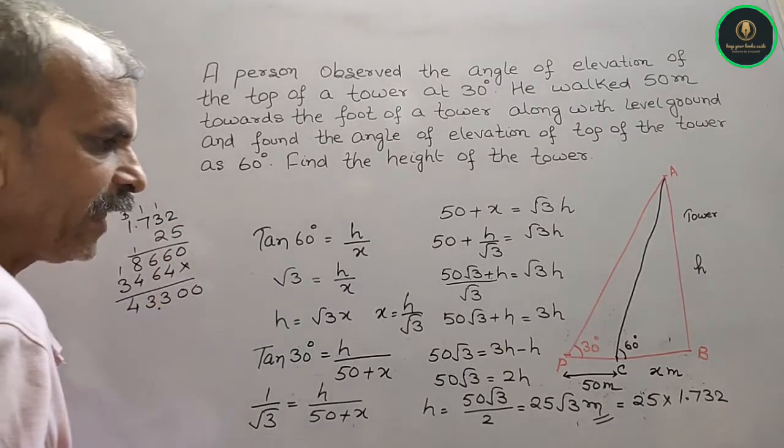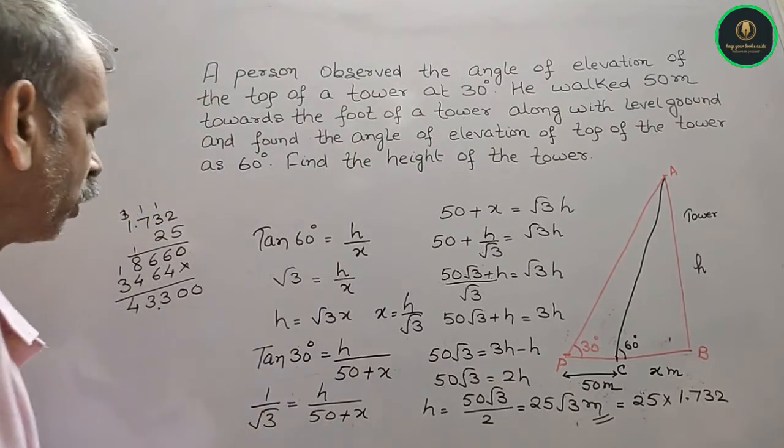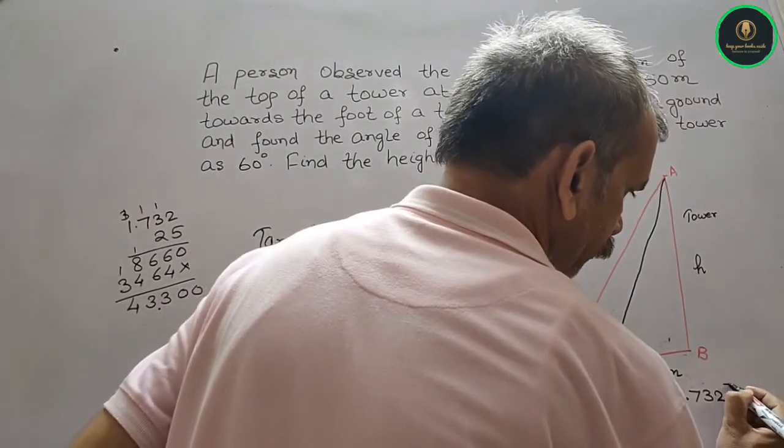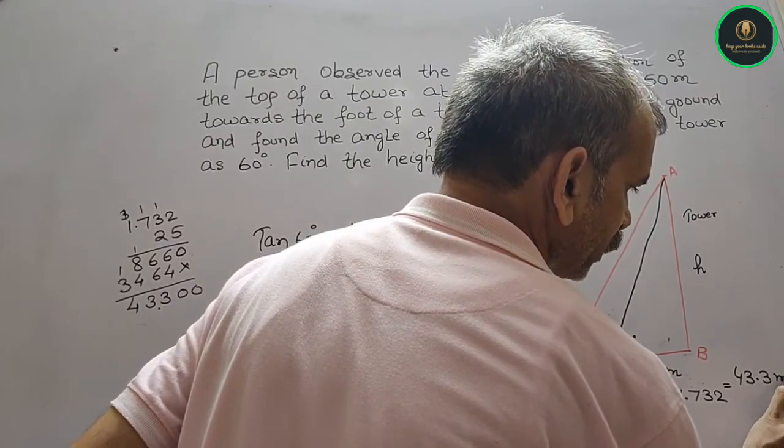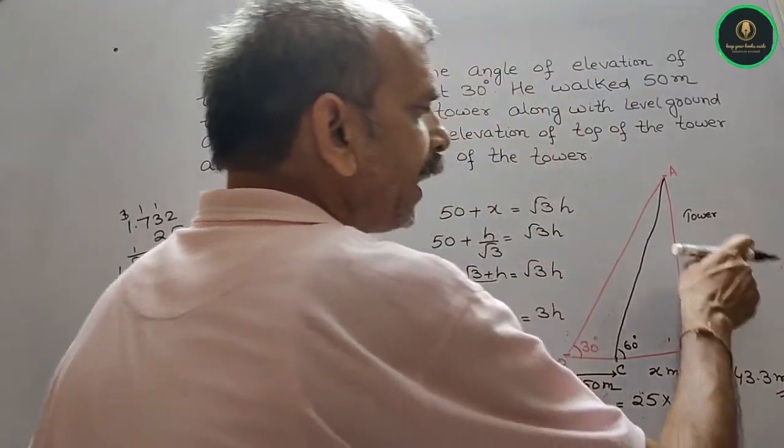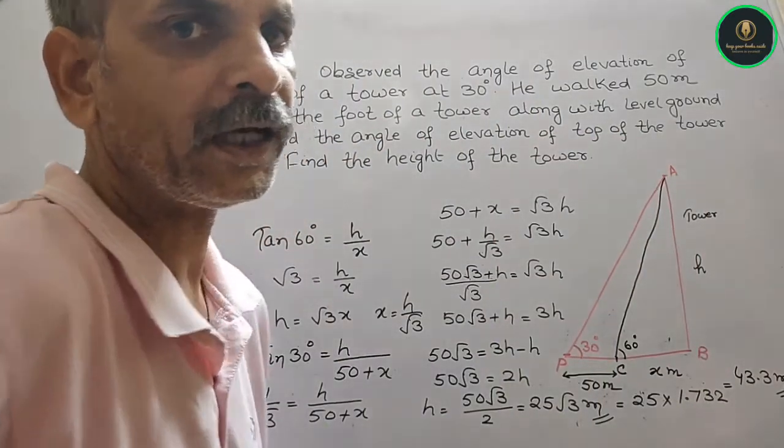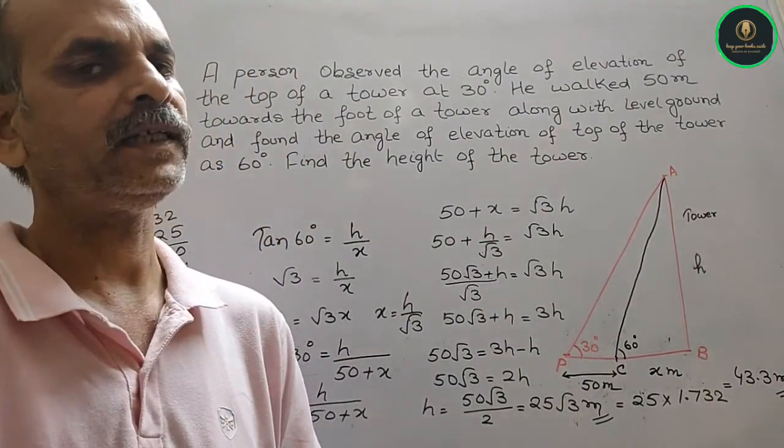So that means your value is 43.3 meters. 43.3 meters is your height of the tower. That's it.